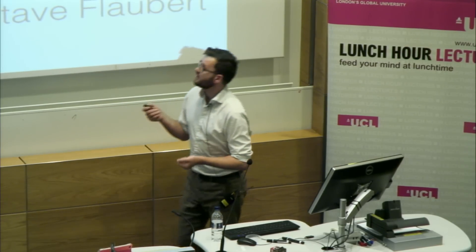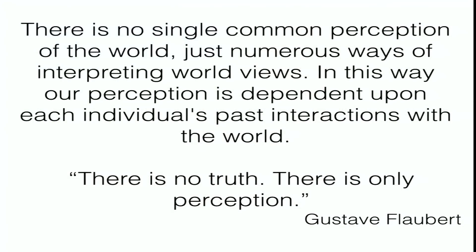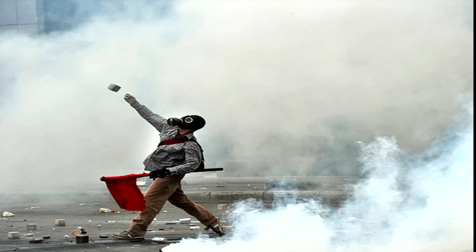This fits with Gustave Flaubert's quote: 'There is no truth, there is only perception' — or rephrased: there is no such thing as a common reality, there is only our perceptions of reality. To end, going back to the image I started with: the reason we're able to infer information about this person is because we have experience of throwing things ourselves — experience of what our bodies would be like when throwing, and that would not be the position we'd adopt if catching. The argument is that it's our motor system that's adding the missing information, allowing us to make these inferences when we observe others, which in part enables accurate non-verbal social communication. Thank you very much.